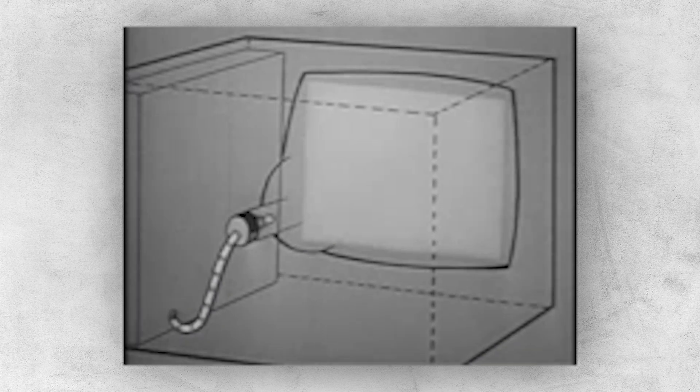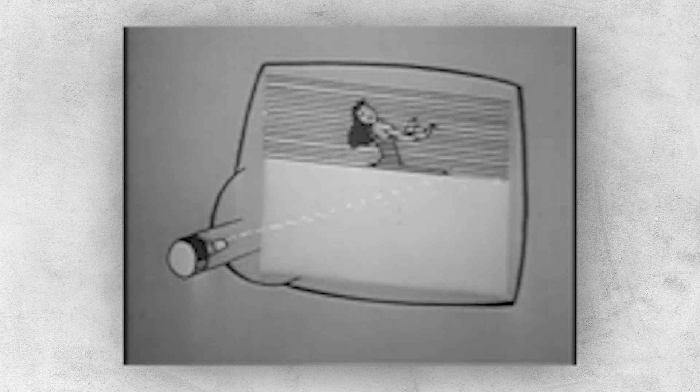Despite these developments, transmission technology for still images remained largely tied to traditional photography methods. For example, on October 7th, 1959, the Soviet space probe Luna 3 captured and transmitted the first images of the hitherto unseen far side of the moon.